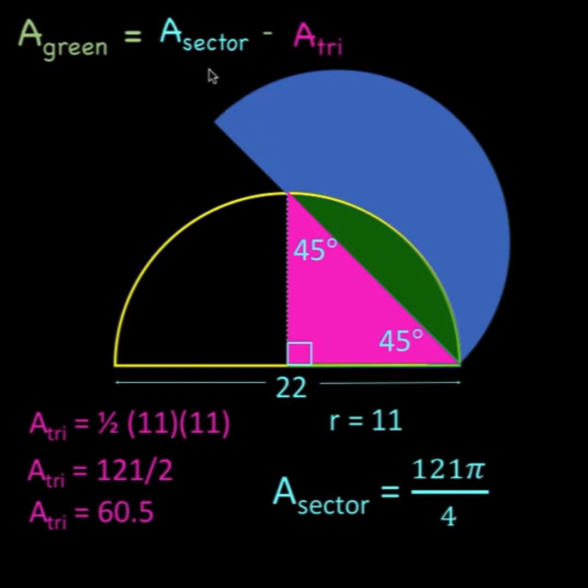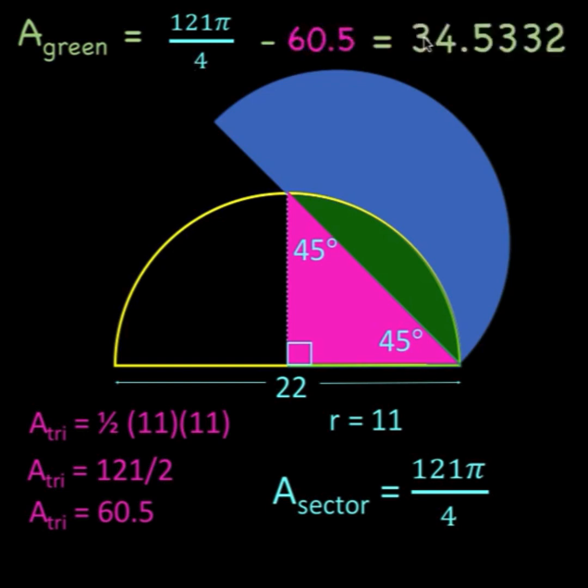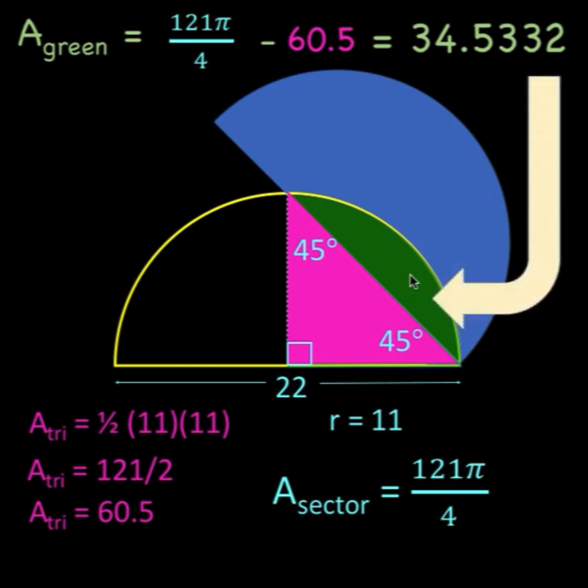So the area of this is 121π over 4. The area of the triangle is 60.5. This gives us a preliminary result of 34.5332 for the area of this green shaded region.